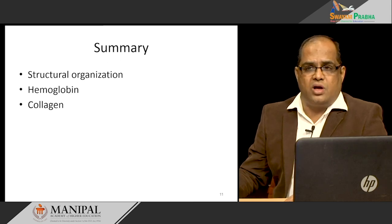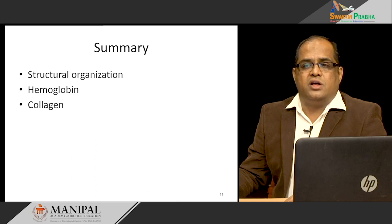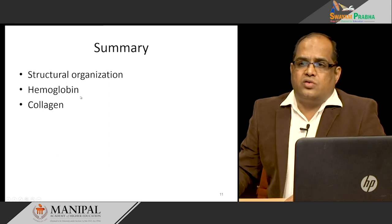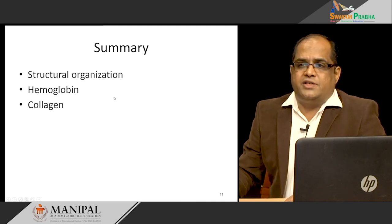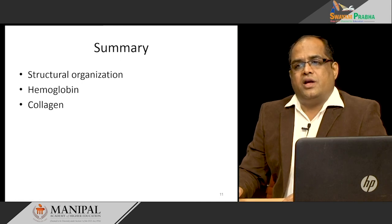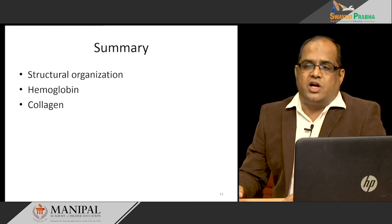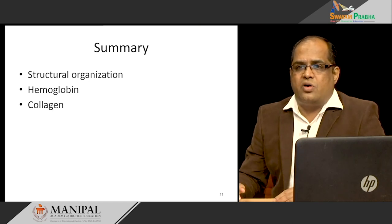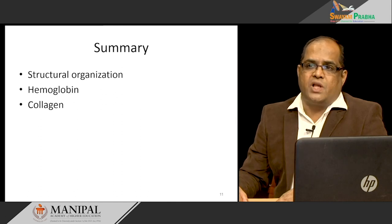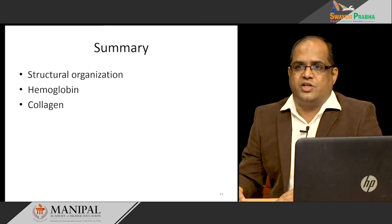We also reviewed the oxygen dissociation curve — how hemoglobin binds oxygen at high oxygen tension in the lungs and releases it at the tissue level. We discussed collagen structure: alpha helical, three polypeptide chains, around 1000 amino acids, majority glycine, proline, and lysine. Proline gives kinks or bends to the collagen chain; glycine, being the smallest amino acid, sits at the restricted places. There is hydroxylation of proline and lysine to form hydrogen bonds, and the fibrils are joined together by cross-linking through lysyl oxidase. I hope this lecture helps you understand the different structural organizations and how they play a role in the functioning of these molecules.